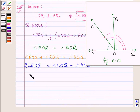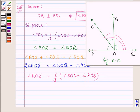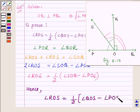Therefore, angle ROS is equal to half of angle SOQ minus angle POS.